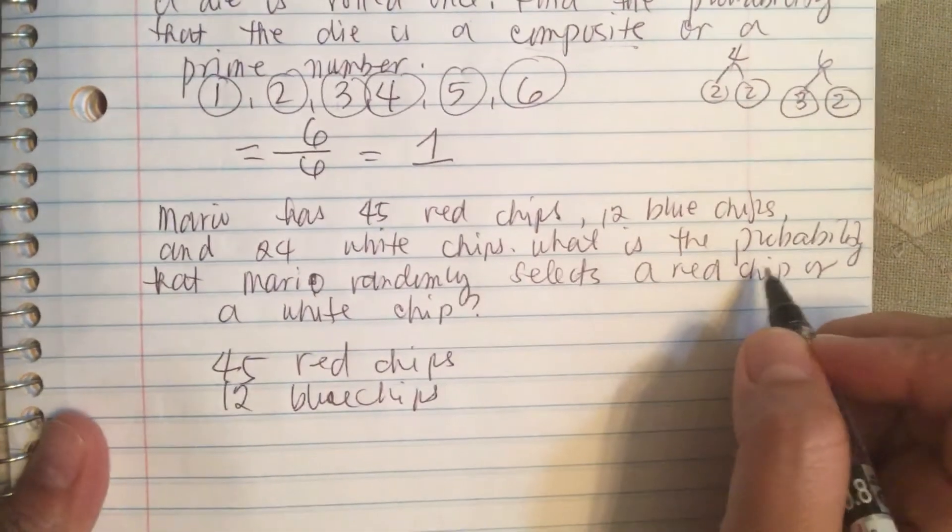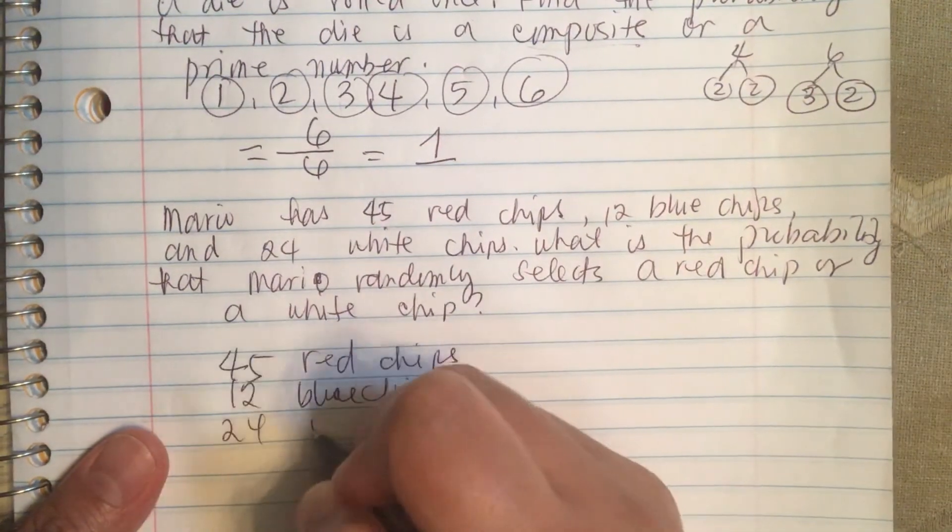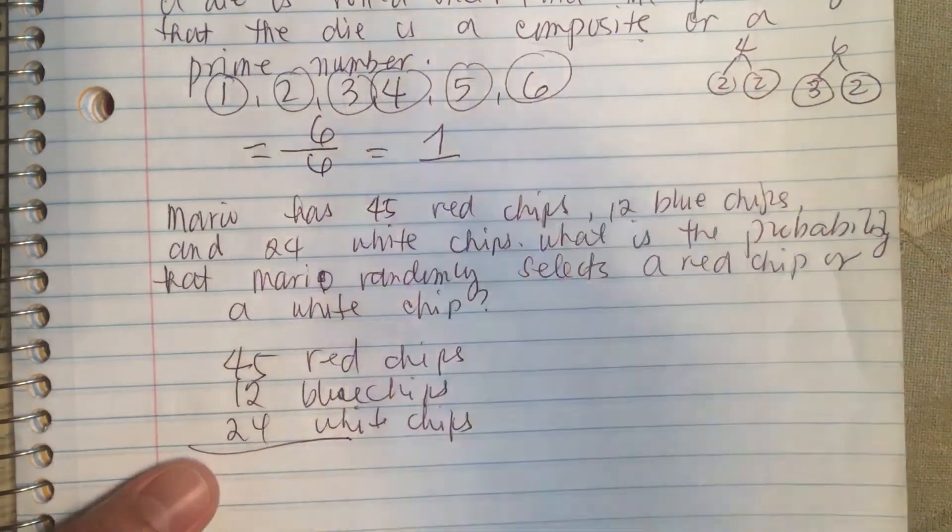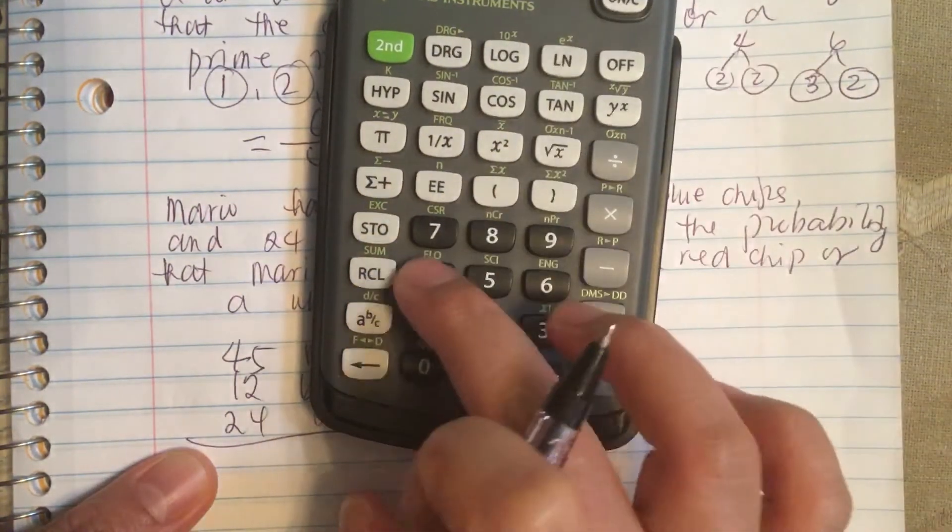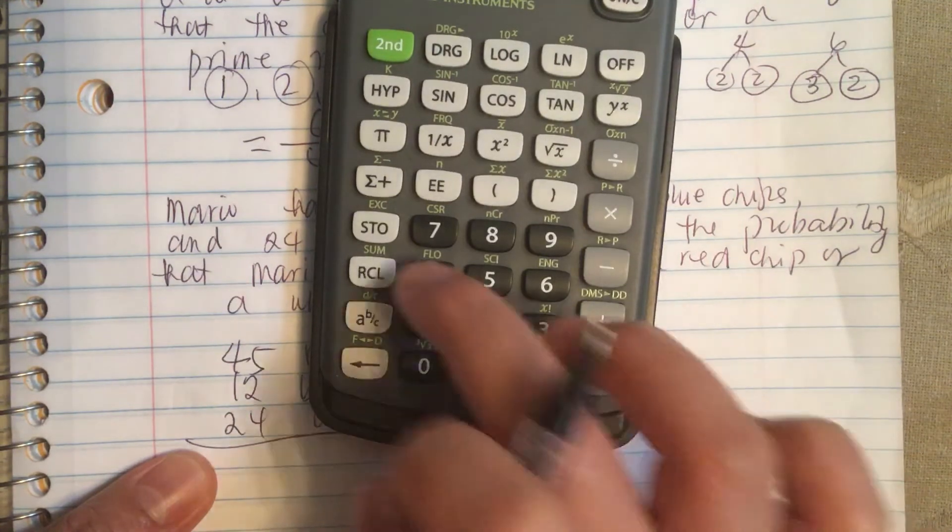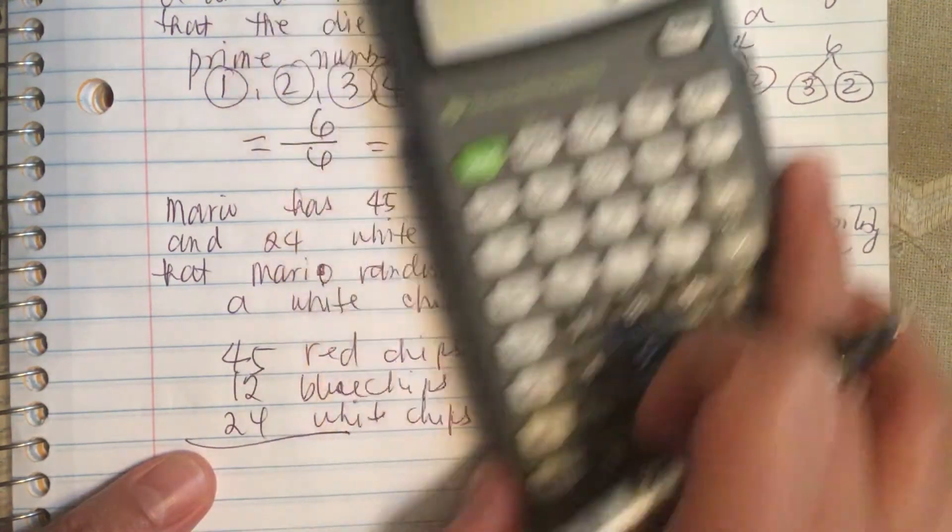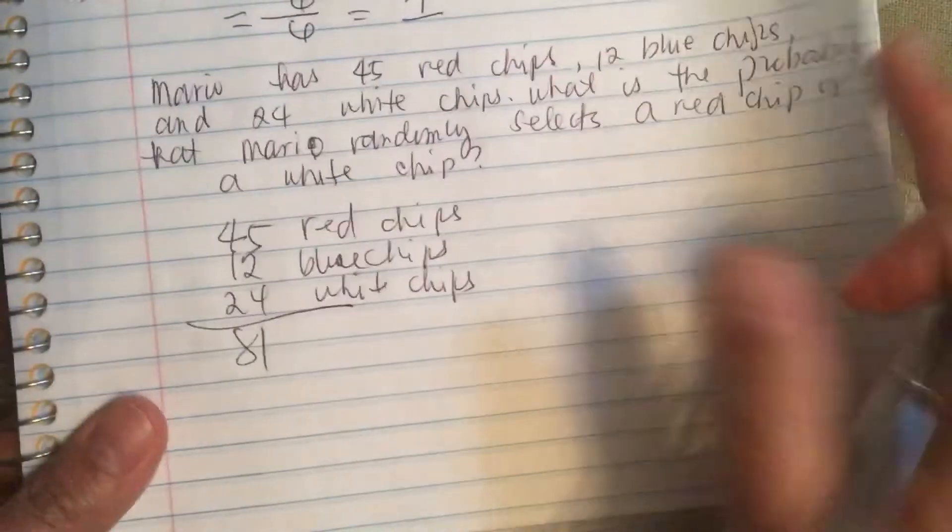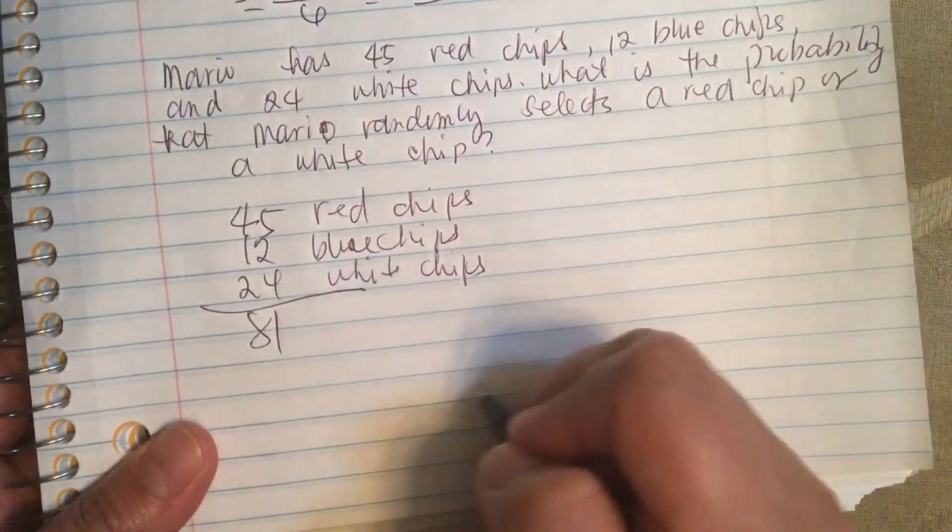So there are 45 red chips and then 12 blue chips and then 24 white chips. Now we have to calculate the total. So we have 45 plus 12 plus 24, so it's equal to 81. So 81 is the number of total cases, so that goes on the bottom.